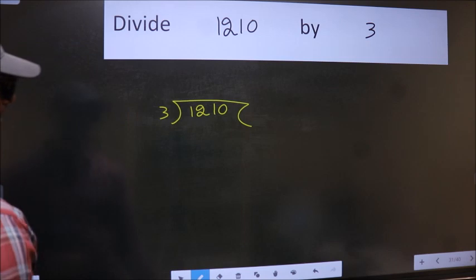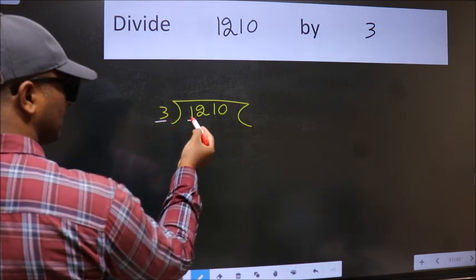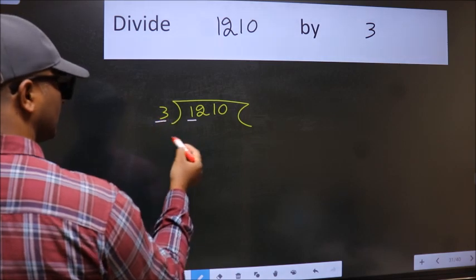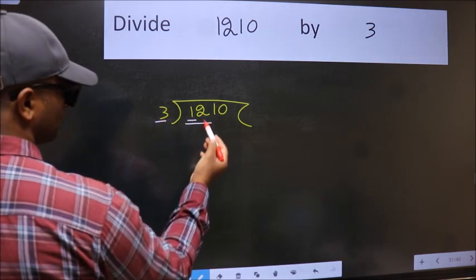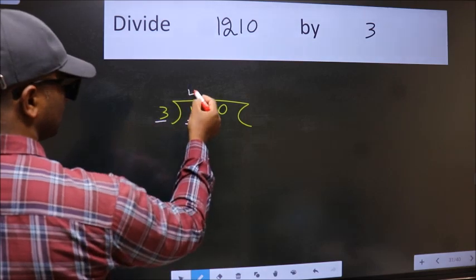Next, here we have 1 and 3 here. 1 is smaller than 3, so we should take 2 numbers, 12. When do we get 12 in 3 table? 3 fours, 12.